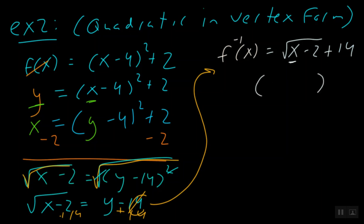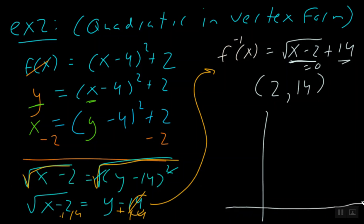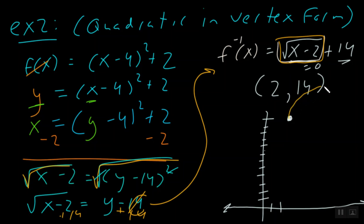We change y back into f inverse of x, so our inverse function is equal to the square root of x minus 2 plus 14 on the outside. We look at where x makes the internal grouping equal to 0: if x minus 2 equals 0, then x must be positive 2, and we have positive 14 outside — so the starting point is at (2, 14). A square root function looks like a curve starting at that point and extending to the right.